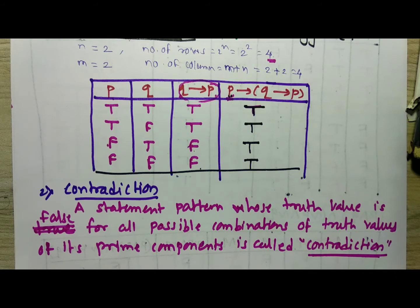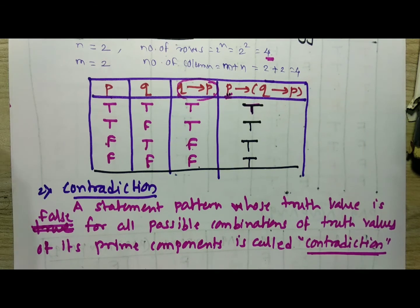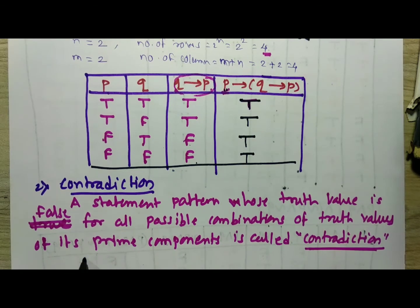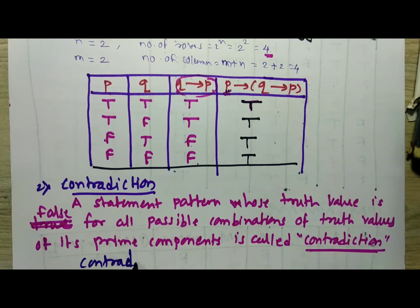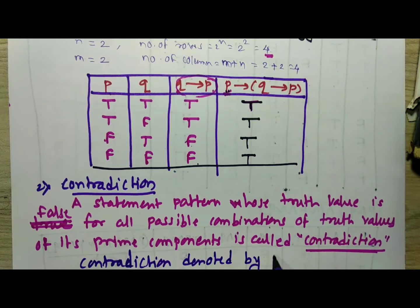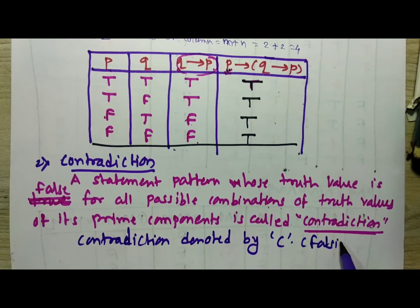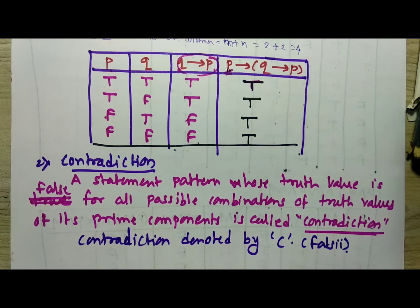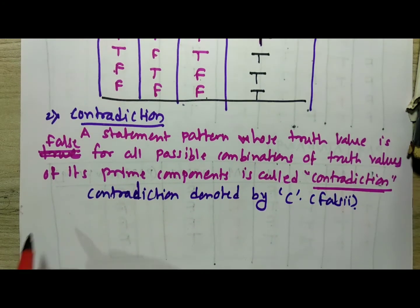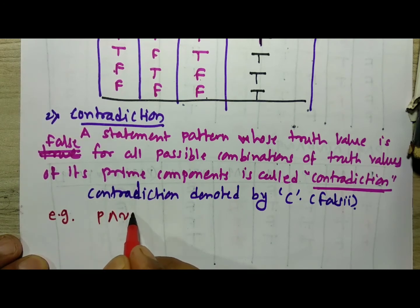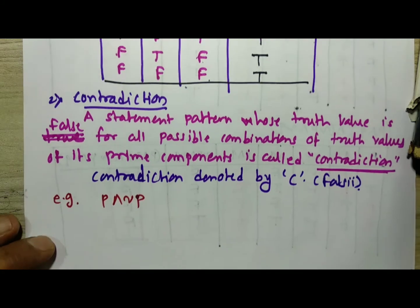Contradiction is denoted by C, and it is also called a falsie. The example we consider for contradiction is P and negation P — that is, P ∧ ¬P.